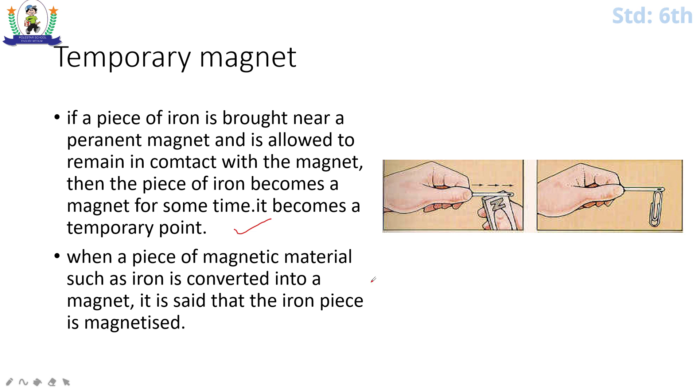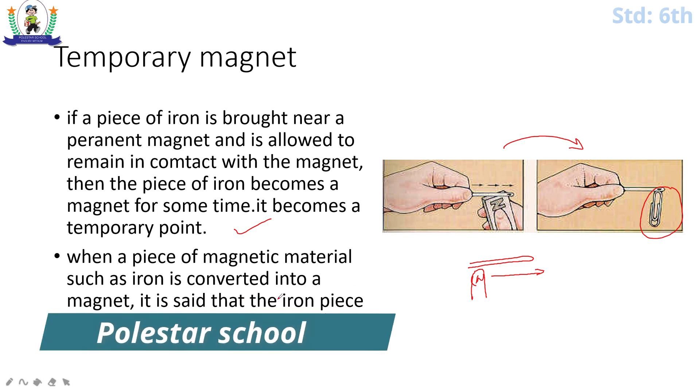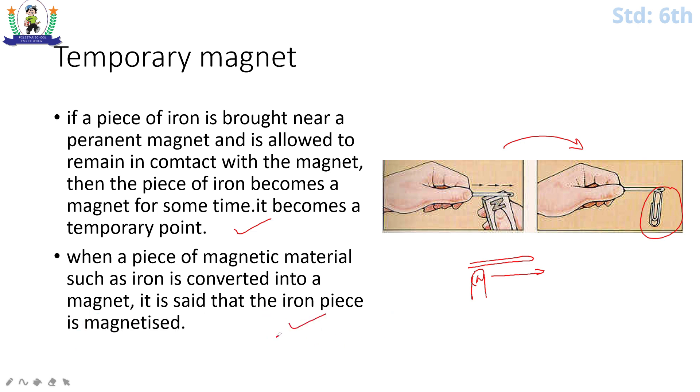Here you can see a nail. You will rub the nail with a permanent magnet in one direction. Then what will happen? A little bit later, a clip or a little bit of iron will attract it. So when a piece of magnetic material such as iron is converted into a magnet, it is said that the iron piece is magnetized. So this type of thing which attracts the magnet will convert into magnetic material. So what do we say? Iron piece is magnetized.